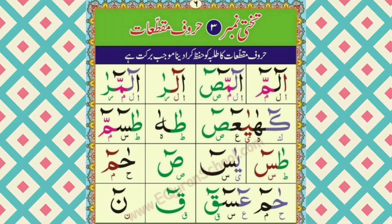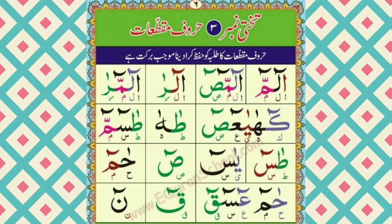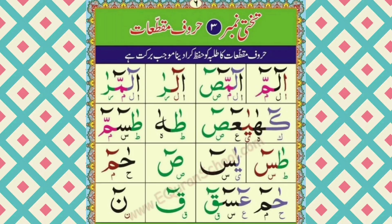یہاں میم کے اوپر تشدید ہے، تو اس کا مطلب ہے کہ یہاں دو میم ہیں — ایک میم ساکن ہے اور دوسرا میم متحرک ہے۔ متحرک کہتے ہیں یعنی زبر، زیر یا پیش جو ہوتی ہیں وہ حرکات کہلاتی ہیں، اور جس حرف پر کوئی حرکت آ جائے وہ حرف متحرک کہلاتا ہے۔ تو یہاں دو میم ہیں — پہلا ساکن، دوسرا متحرک — اور ایک قاعدہ یہ ہے کہ اگر میم ساکن کے بعد میم آ جائے تو وہاں غنہ کیا جاتا ہے۔